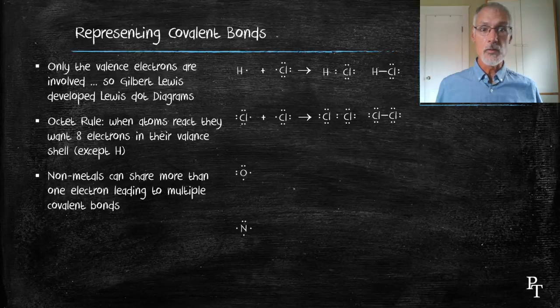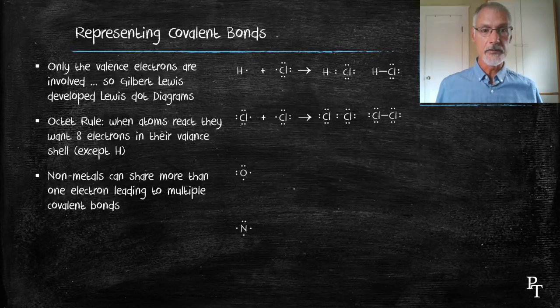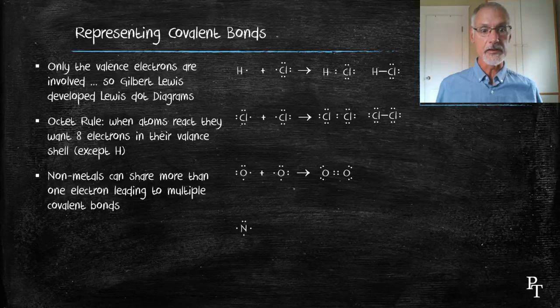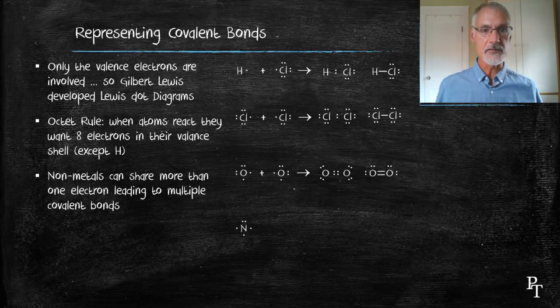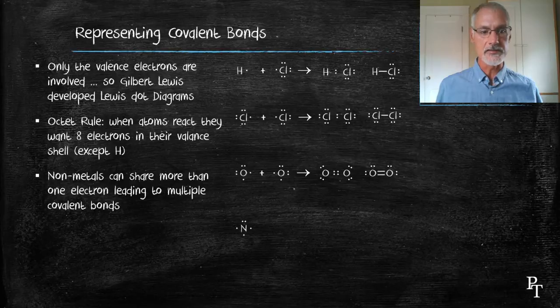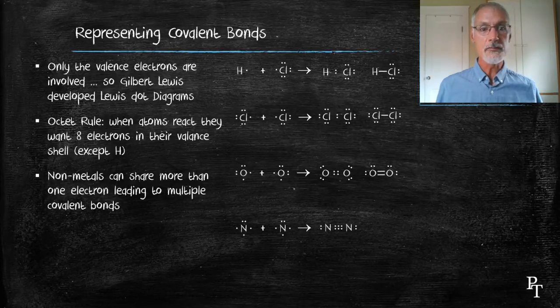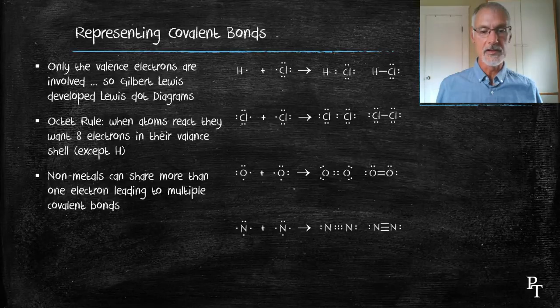Some nonmetals can share more than one pair of electrons to become stable. So for instance, oxygen with six valence electrons can share with another six, can share two pairs of electrons and thereby obtain eight electrons. This would be represented by two dashed lines if we wanted to use the dashed line configuration. Nitrogen, with five valence electrons, will share three pairs of electrons to become stable, and it could therefore be represented with three lines.